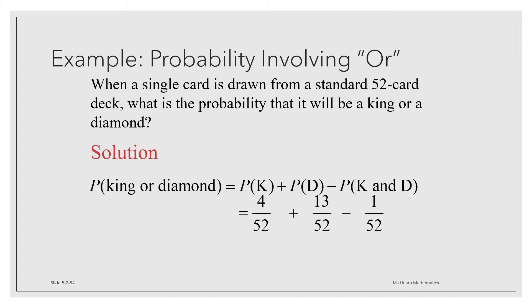So what's the probability of drawing a king? Well, there are four kings out of the 52 cards. The probability of a diamond is 13 out of the 52. And there's only one card that's both a king and a diamond. That's called the king of diamonds. So there's a 1 out of 52 chance of getting that.